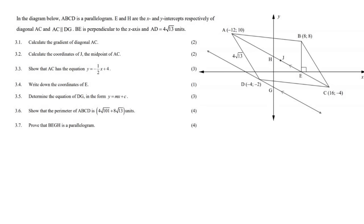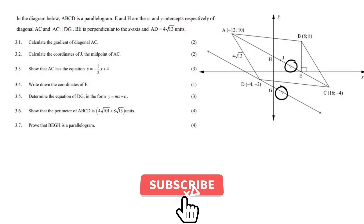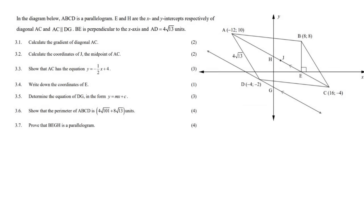In the diagram we are given a parallelogram. E and H are the x and y intercepts. These two lines are parallel and BE is perpendicular. The length of AD is 4 square root 13. Everything has been shown on the diagram.